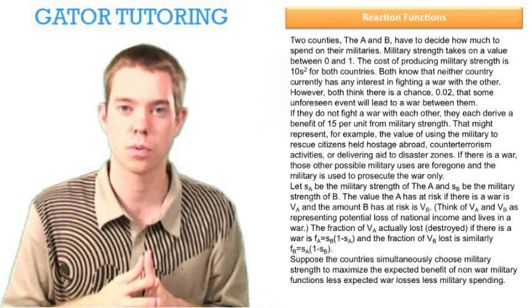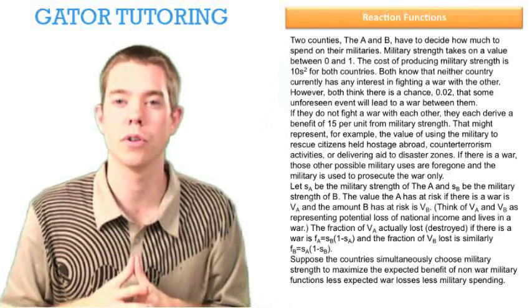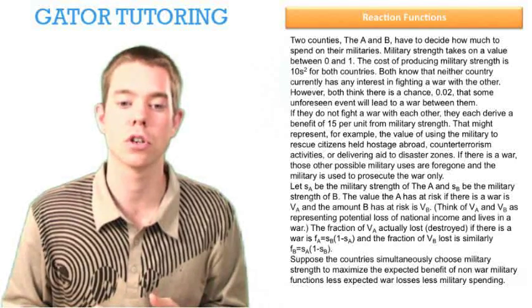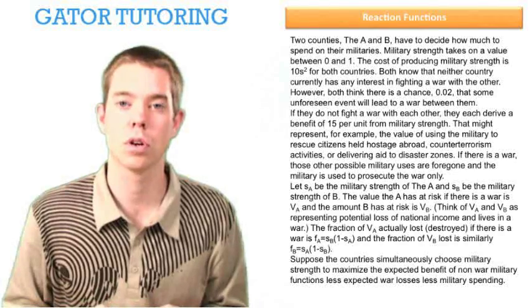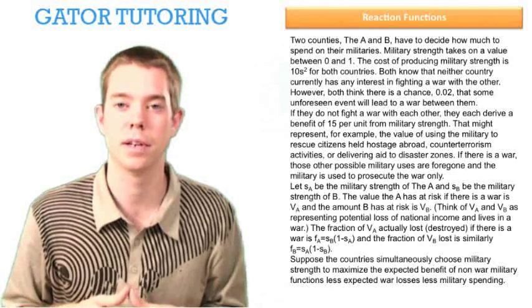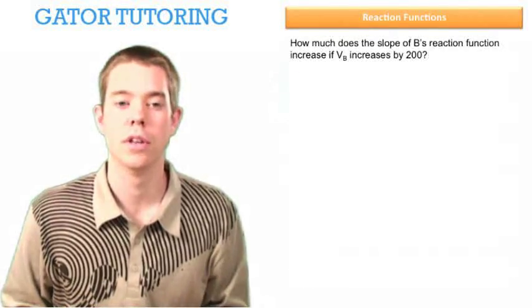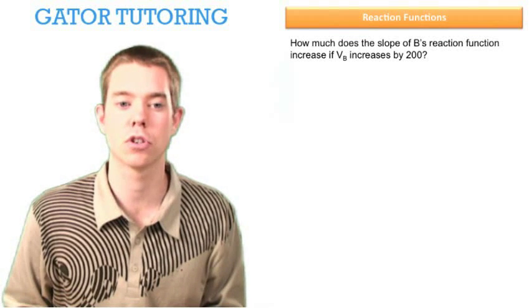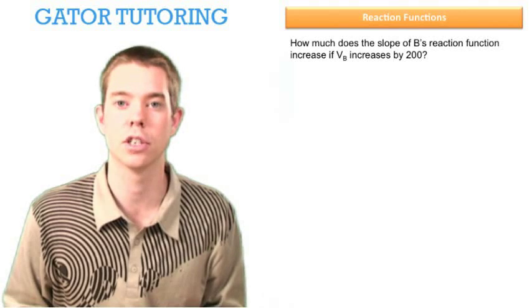That sentence we just read—non-war military functions less expected war losses less military spending—we're going to call the total value of each country. The actual question asks us: how much does the slope of B's reaction function increase if VB increases by 200?